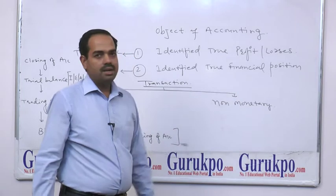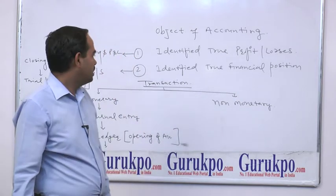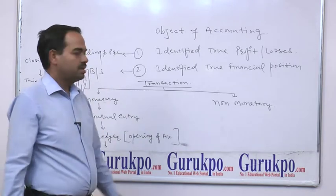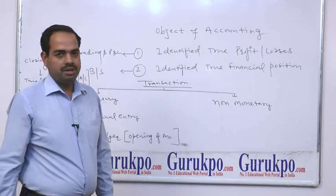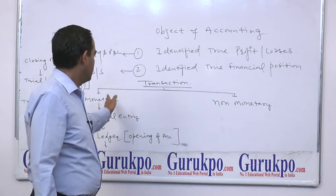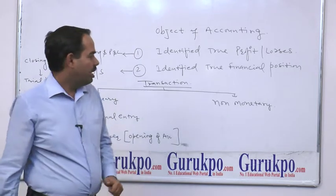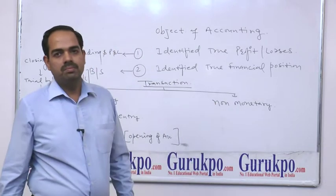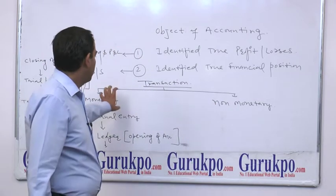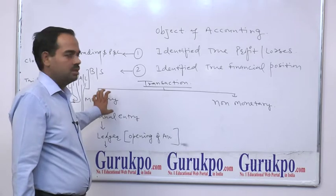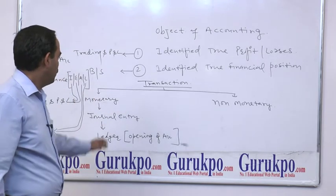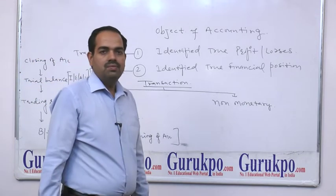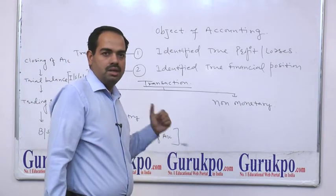How trading and P&L and balance sheet is to be prepared: accounting starts from transactions. Transactions may be classified into two parts — monetary and non-monetary. Monetary transaction means a transaction in which money is involved, and non-monetary transaction means a transaction in which there is no involvement of money. Accounting is to be made only for monetary transactions. Monetary transactions are first of all written in a primary book known as journal in the form of an entry, so it is named journal entry.